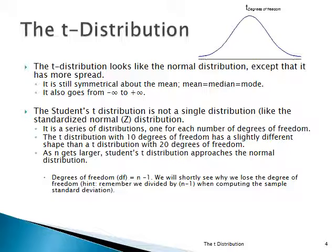What do we mean by degrees of freedom? We have that concept already. All you have to know for this course is n minus one — the sample size minus one. In the next slide, you'll see why we lose one degree of freedom. It's basically a mathematical reason. In this case, with a one-sample study, you lose one degree of freedom. So if your sample size is 25, you're going to be dealing with T24.